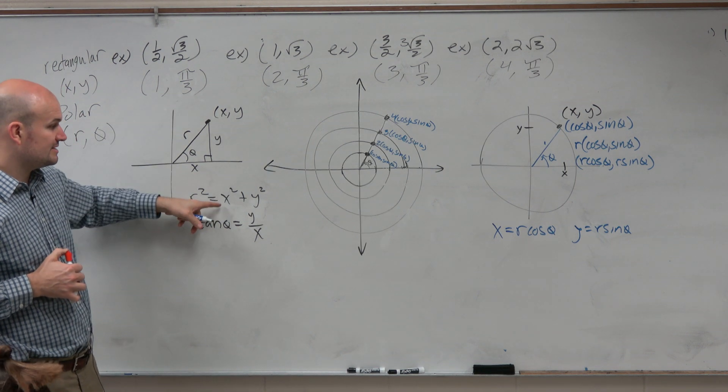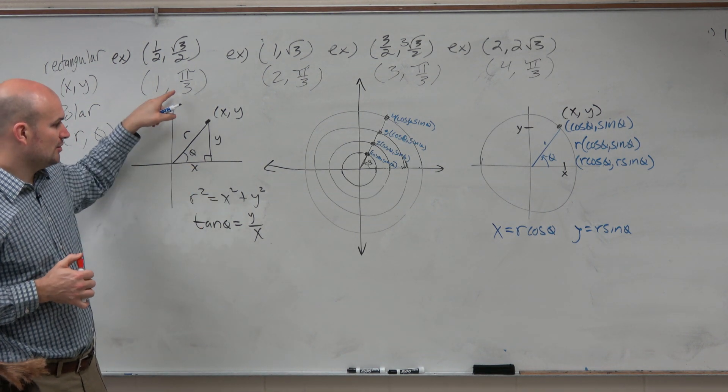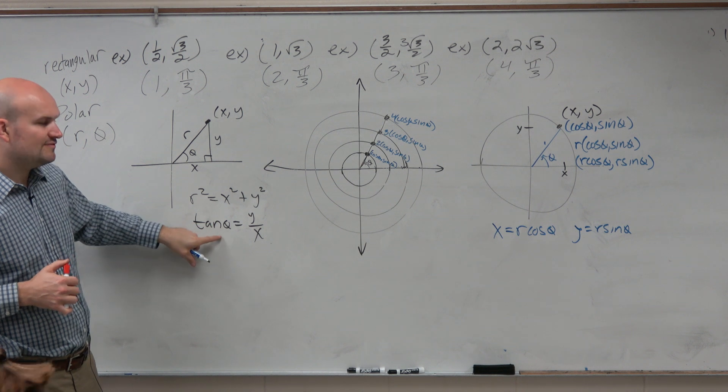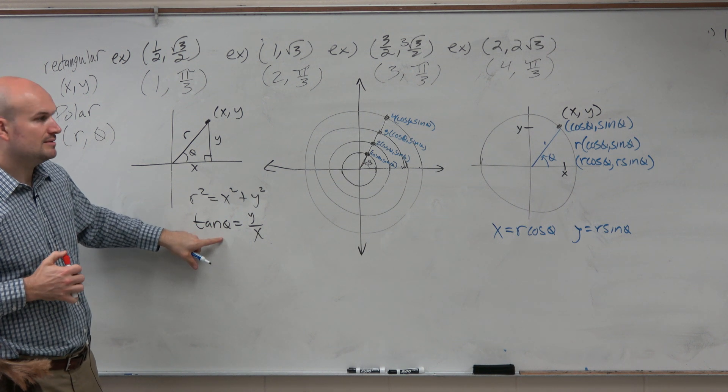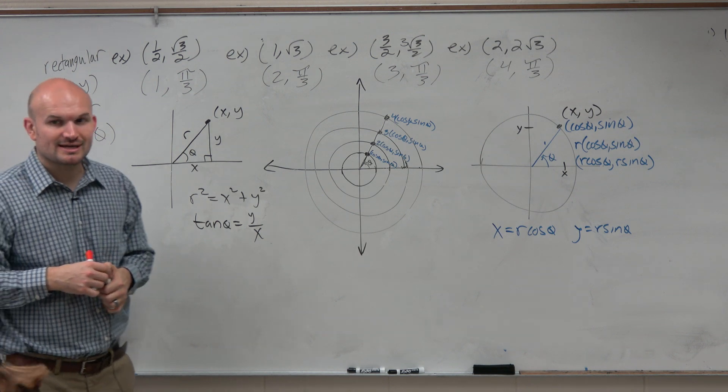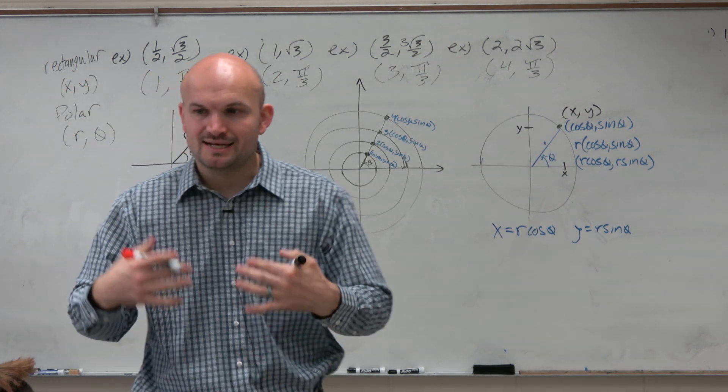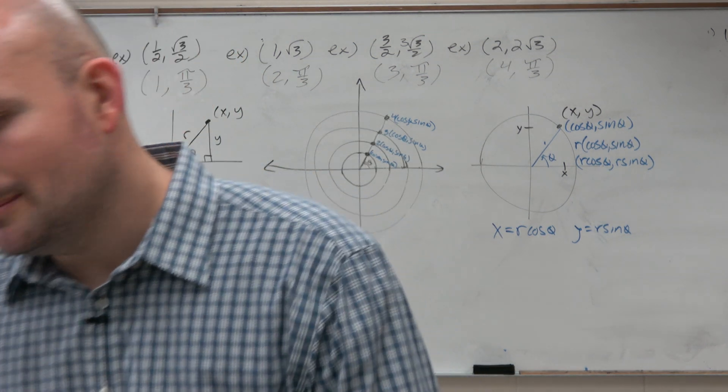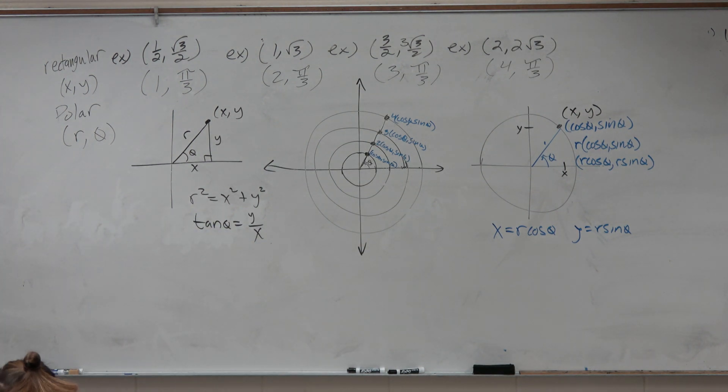If you're given rectangular points and need to write them in polar form, find the r and then find the angle. Create your triangle. Trig is not going away - it's not as heavy as before, but it didn't go away.